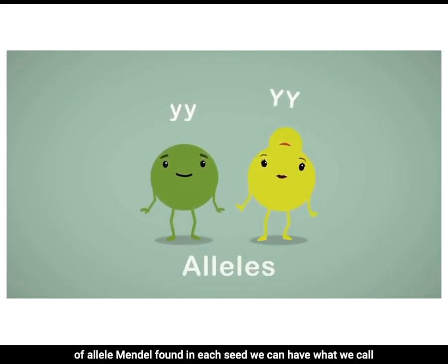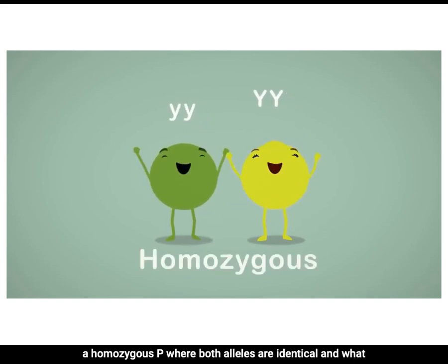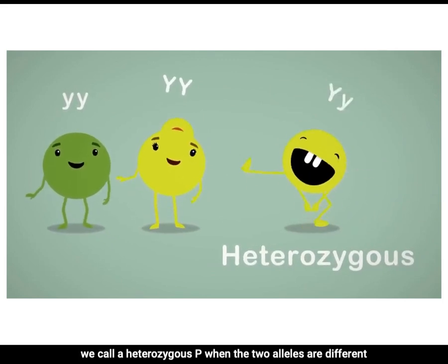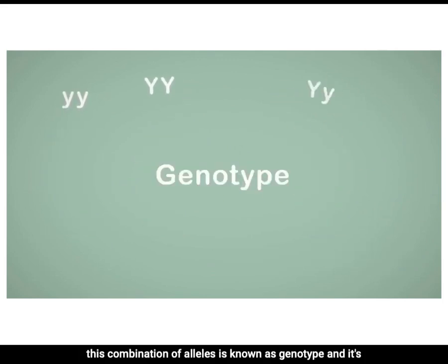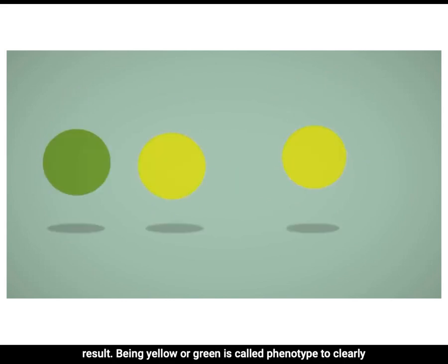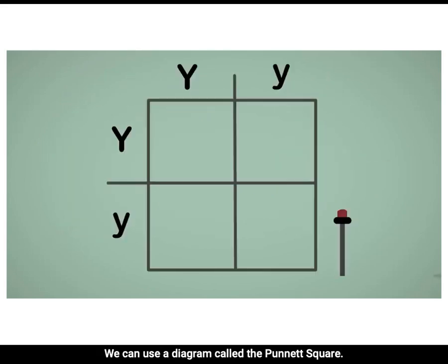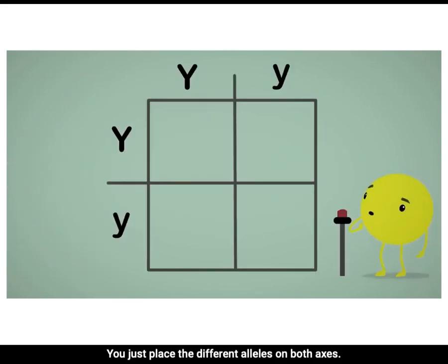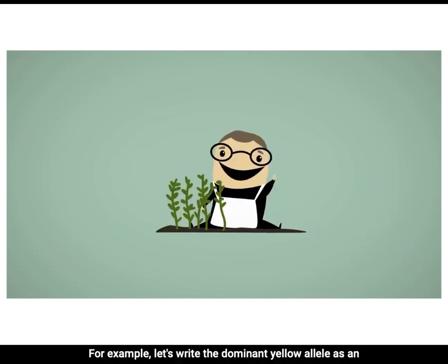Depending on which type of allele Mendel found in each seed, we can have what we call a homozygous pea, where both alleles are identical, and what we call a heterozygous pea, when the two alleles are different. This combination of alleles is known as genotype, and its result — being yellow or green — is called phenotype. To clearly visualize how alleles are distributed amongst descendants, we can use a diagram called the Punnett square. You just place the different alleles on both axes, and then you figure out the possible combinations. Let's look at Mendel's peas as an example.